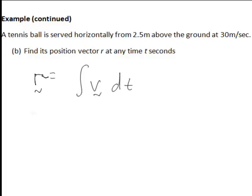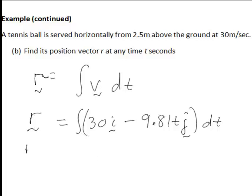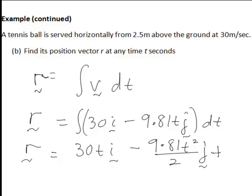In the previous part we found that the velocity was equal to 30i minus 9.81tj so we're now integrating that to find the position vector r. Integrating term by term, 30i becomes 30ti minus 9.81tj becomes minus 9.81 t squared divided by 2 all times j, and again this will be plus a constant vector which I'll call d.